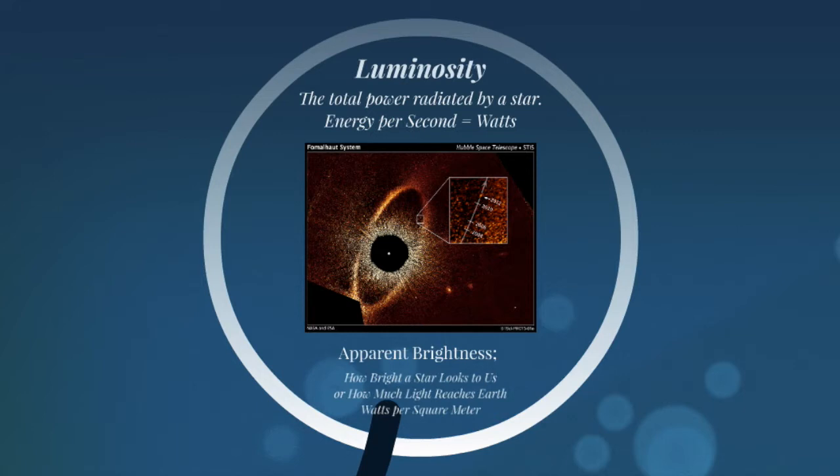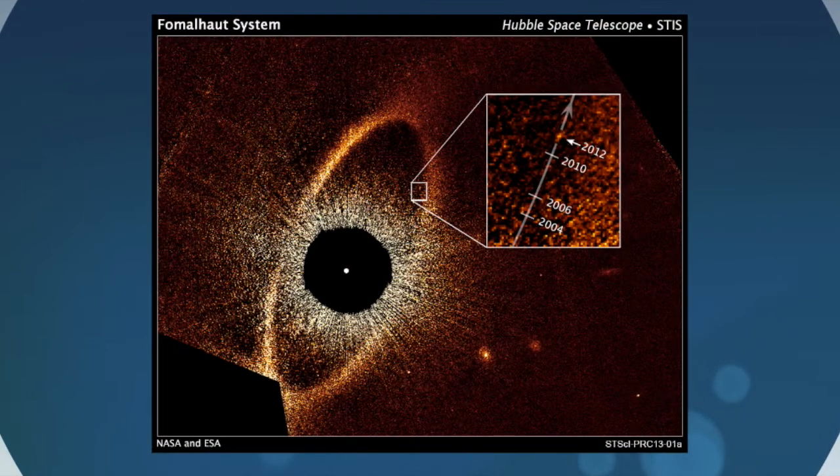And when I look at the sky, I see stars of different brightness. So we have an apparent brightness. And the apparent brightness is how bright the star looks to me. So that's how bright the star is when I'm here on Earth. And so the units there are watts per square meter.